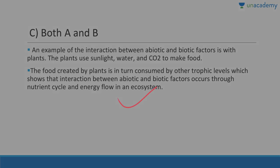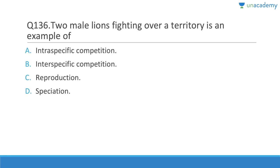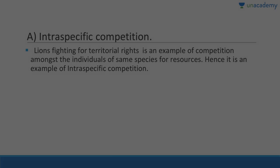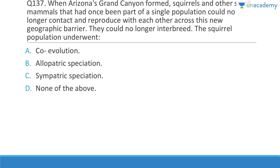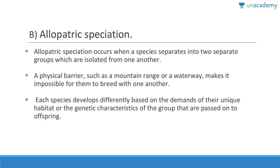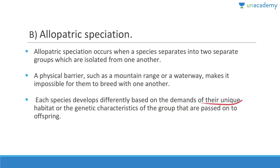Question 136: Two male lions fighting over territory is an example of intraspecific competition — they belong to the same species. Question 137: When Arizona's Grand Canyon formed, squirrel populations on either side could no longer contact or reproduce across the new geographic barrier — this is allopatric speciation. Allopatric speciation occurs when a species separates into two groups isolated by a physical barrier like a mountain range or waterway.